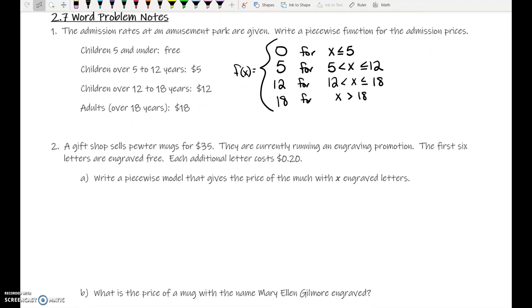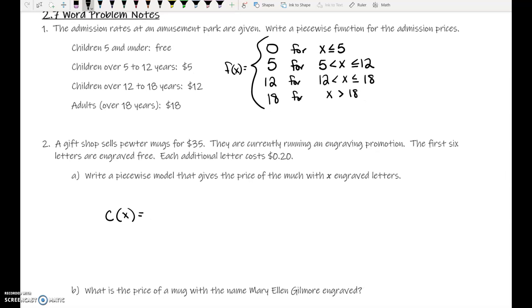A gift shop sells pewter mugs for $35. They are currently running an engraving promotion. The first six letters are engraved for free. Each additional letter costs 20 cents per letter. So they are selling pewter mugs for $35. So the cost of the mug, I'm going to say cost, so c of x equals. It's $35.